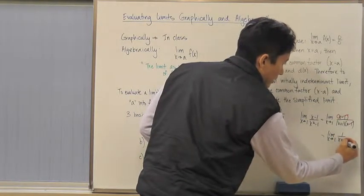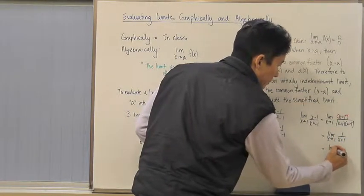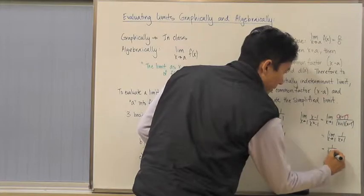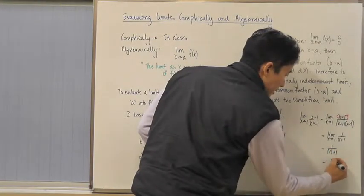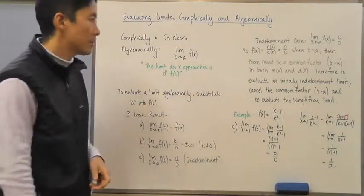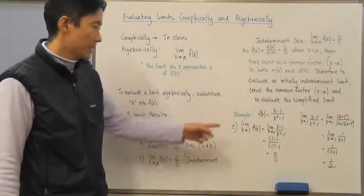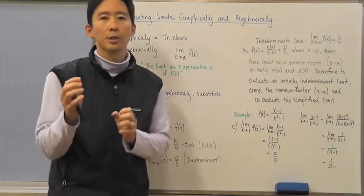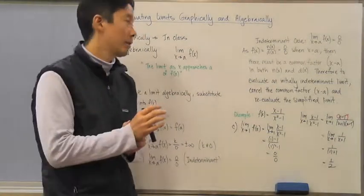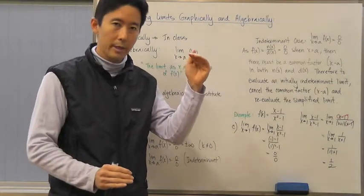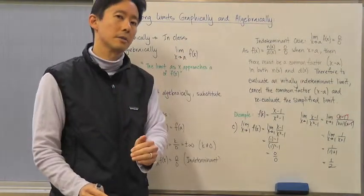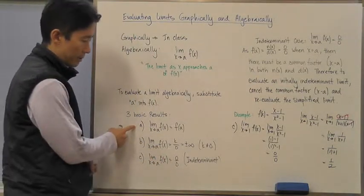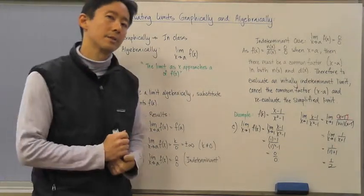After canceling, we reevaluate the simplified limit: the limit as x approaches one of 1 over (x plus 1). Substituting one gives 1 divided by (1 plus 1), which equals one half. So in the indeterminate case, after canceling the common factor, we are able to determine the limit — here it is one half.